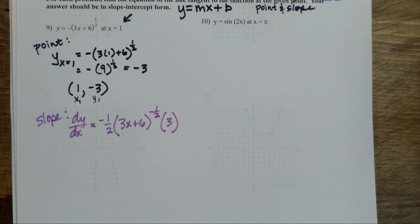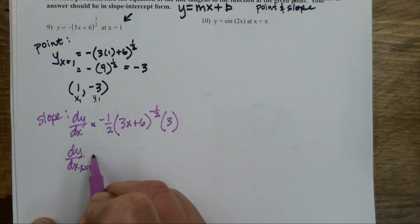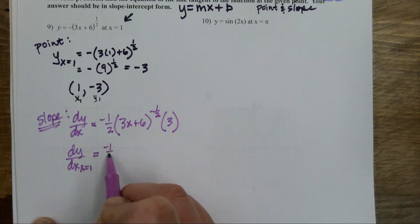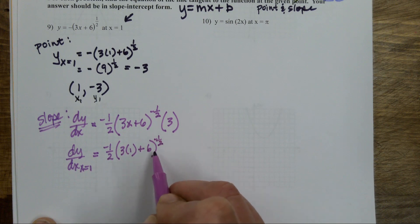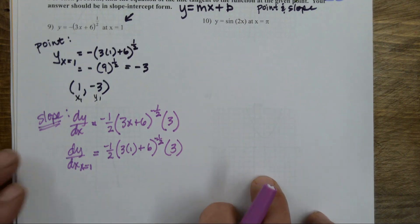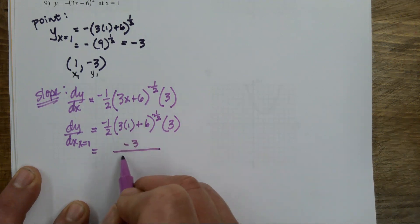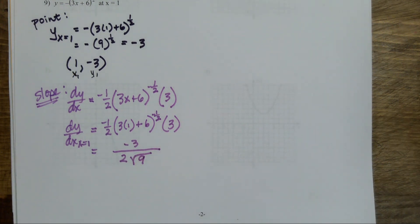Multiply the power in front — so one-half times that negative — negative one-half. Didn't touch the inside, subtracted 1 from one-half to get negative one-half. Then did the derivative of the inside. I'll evaluate that at 1 as well: negative one-half times 3 times 1 plus 6, to the negative one-half power.